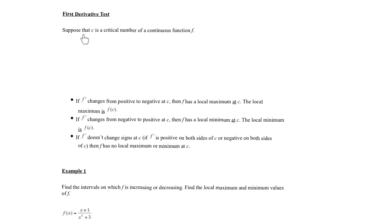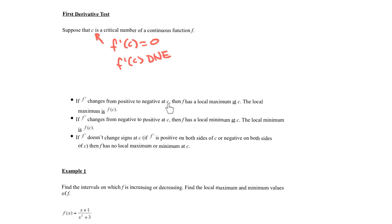The first derivative test says: suppose that c is a critical number of a continuous function. A critical number means either f prime of c equals 0 or f prime of c does not exist — the most important case being when the derivative is 0, where you'll typically have a peak or valley in the curve. If the derivative changes from positive to negative at c, then there's a local maximum at c, and the local maximum is f of c, the y-value.